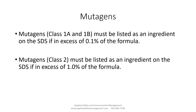When we look at mutagens of class 1A and 1B, if the substance is in excess of 0.1% of the formula, it has to be listed on the SDS. If it's less than 0.1%, a class 1A or 1B mutagen does not have to be listed as an ingredient on the SDS. For class 2 mutagens, they must be listed if they are in excess of 1% of the formula; as long as it's under 1%, it does not have to be listed on the SDS.